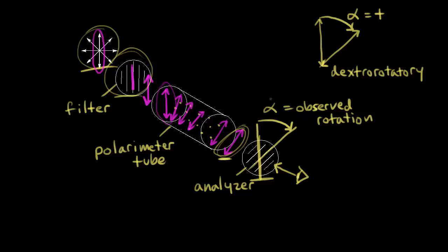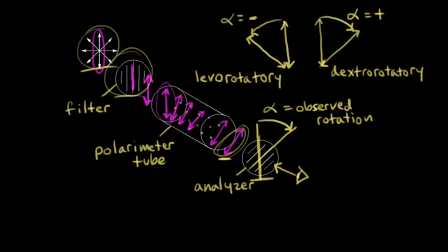What if our plane was rotated to the left? If the light was rotated to the left — so we started off vertical and our light was rotated in that direction — we would have to rotate the analyzer to the left. The observed rotation is said to be negative, a counterclockwise rotation. This is called levorotatory.